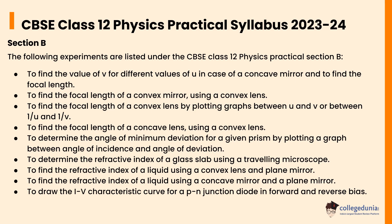The following experiments are listed under CBSE Class 12 Physics Practical Section B: to find the value of V for different values of U in the case of a concave mirror and to find the focal length; to find the focal length of a convex mirror using a convex lens; to find the focal length of a convex lens by plotting graphs between U and V or between 1/U and 1/V; to find the focal length of a concave lens using a convex lens; to determine the angle of minimum deviation for a given prism by plotting a graph between angle of incidence and angle of deviation.